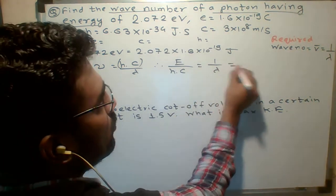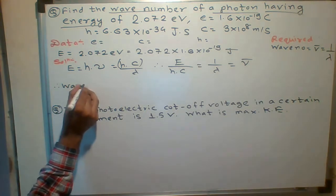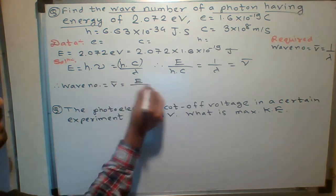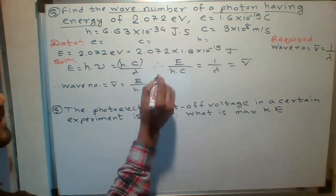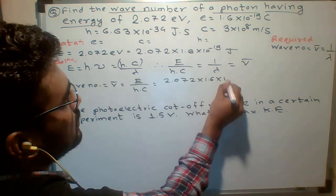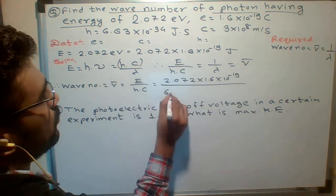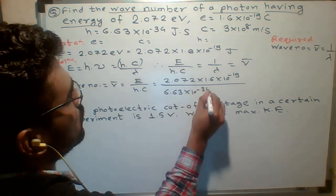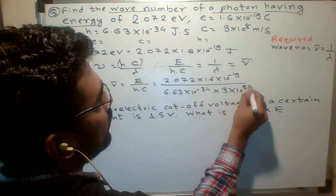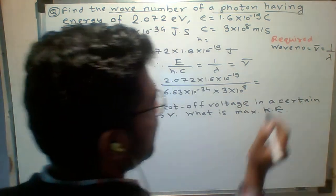That gives us E upon h times c equals one upon lambda. And one upon lambda is what we call wave number, ν̄. So wave number ν̄ = E / (h × c). E = 2.072 × 1.6 × 10⁻¹⁹, h = 6.63 × 10⁻³⁴, and c = 3 × 10⁸. Put in the values and find ν̄.